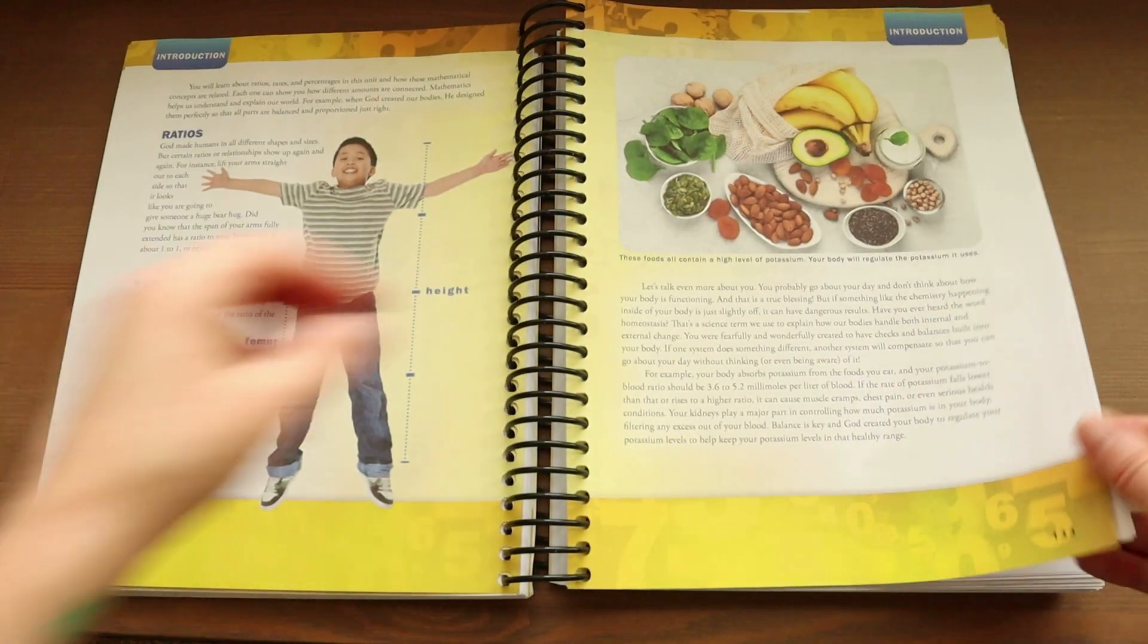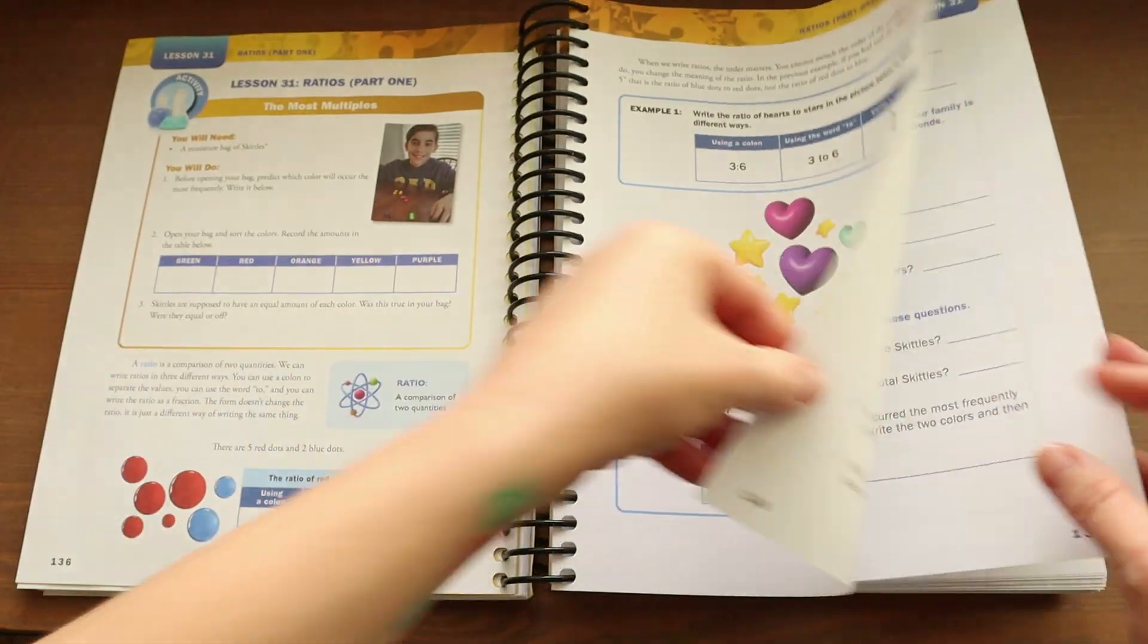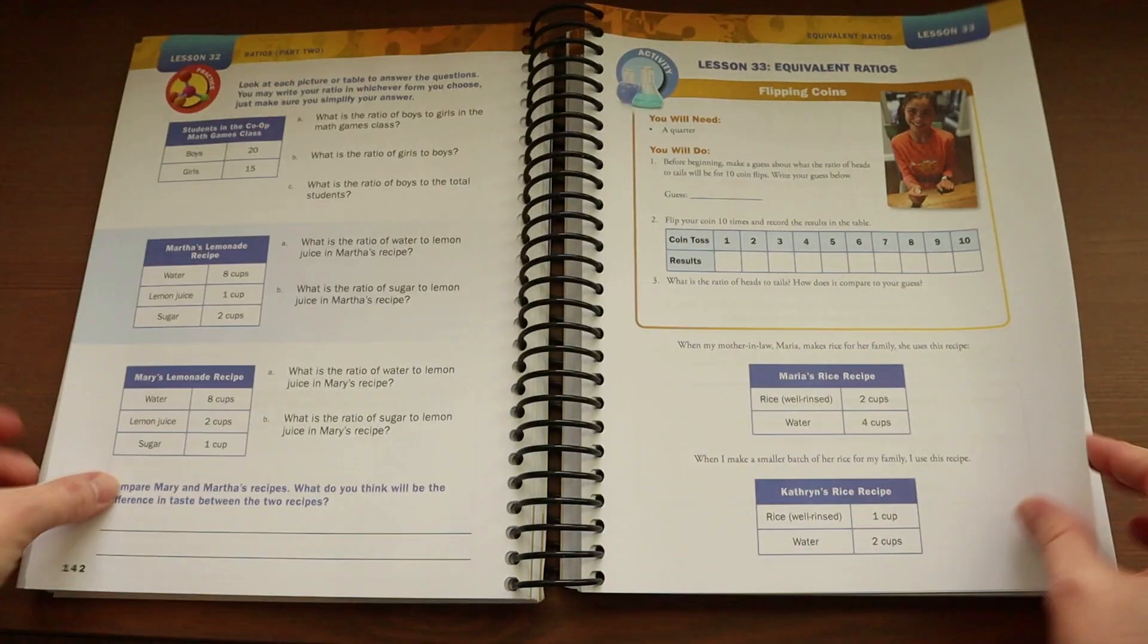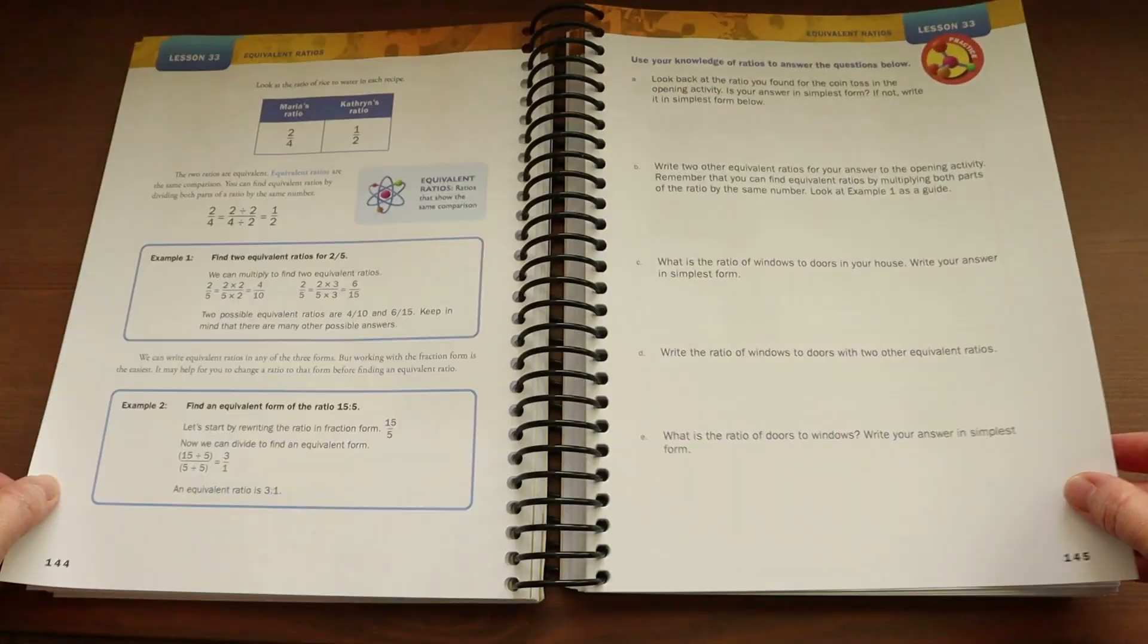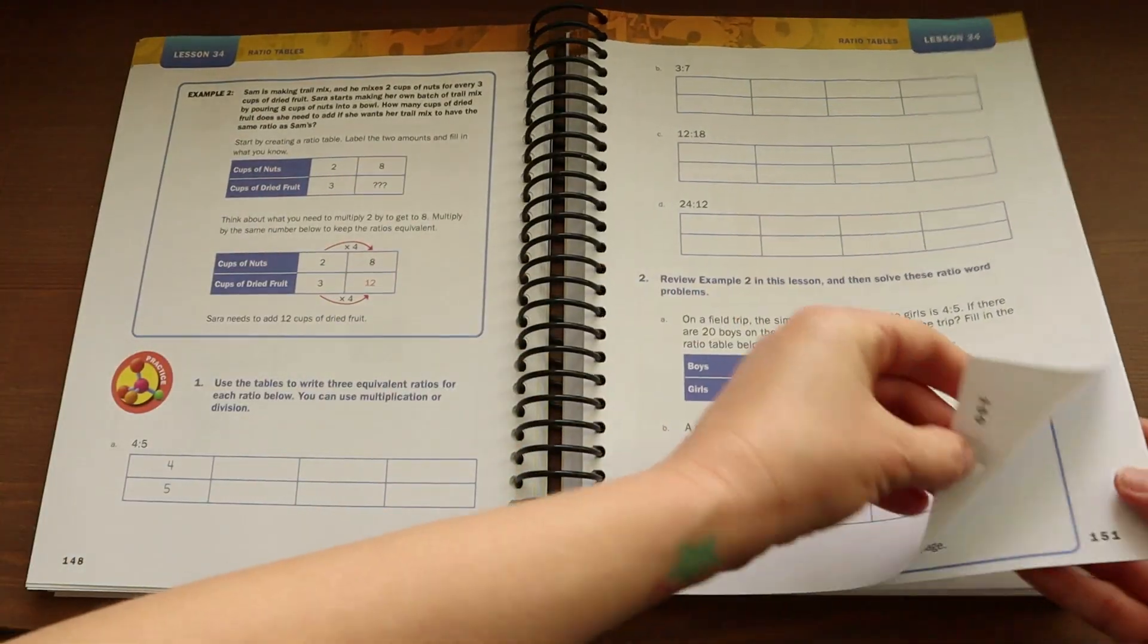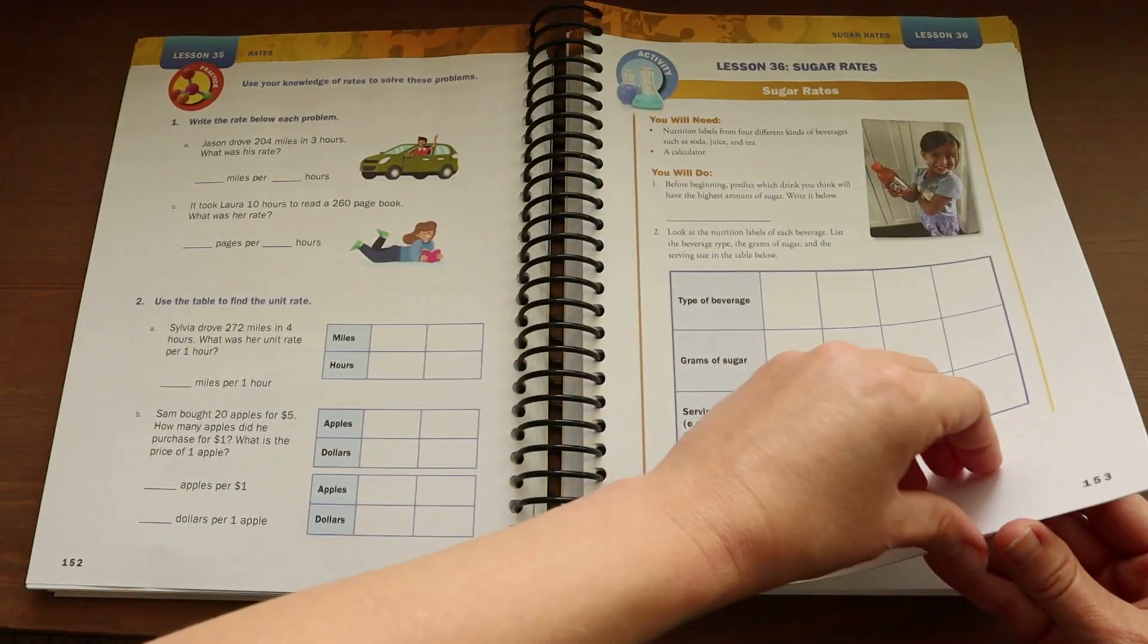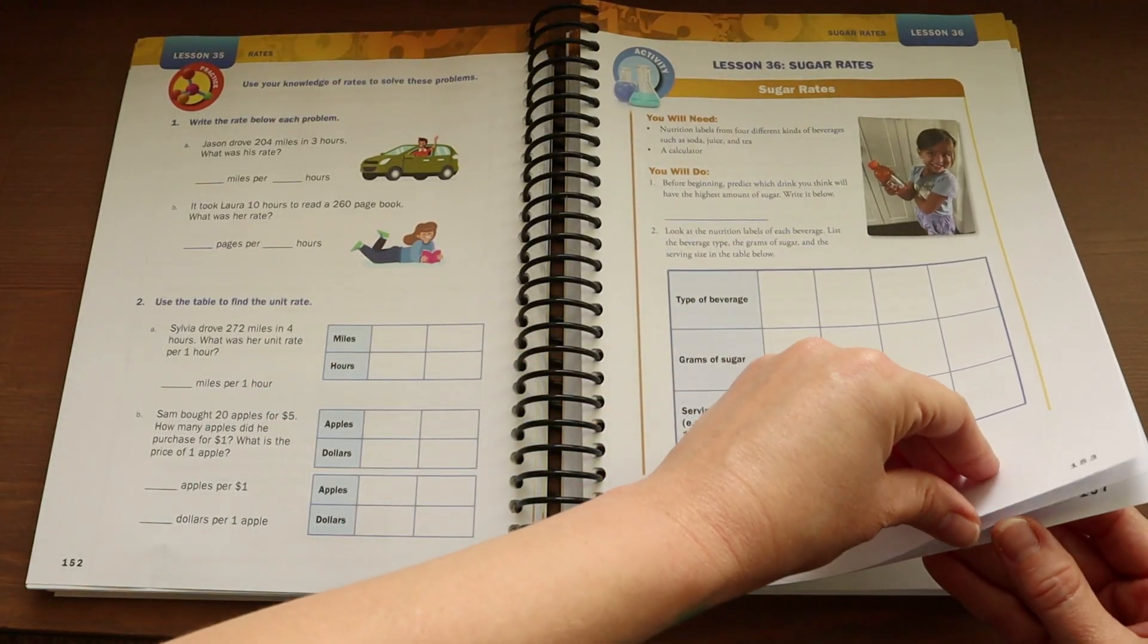There are chapter tests available in the back of the teacher's guide as well as on their website that you can go ahead and print and you can use these in place of the projects or alongside them. Now the supplies needed will be mostly made up of common household items, but there will be a few items that you'll need to make sure that you have on hand that you might have to purchase because you don't have it at home.